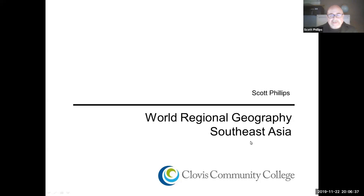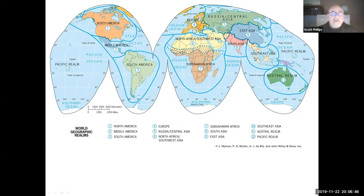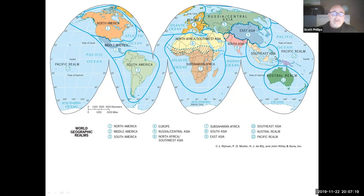Welcome back. Our next realm is Southeast Asia. Make sure you know your concepts, ideas, and terms for this chapter, even if we don't cover it in lecture. I sometimes get tongue-tied because there are these different Asias. We've talked about Central Asia, Southwest Asia, South Asia, and East Asia, and now Southeast Asia. Southeast Asia really lies in the corner between East Asia or China and South Asia or India, which are the major countries of East and South Asia.